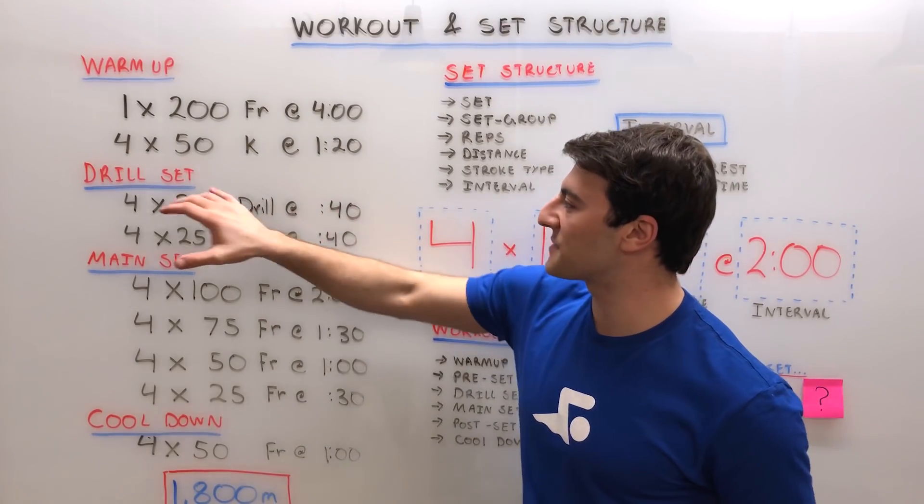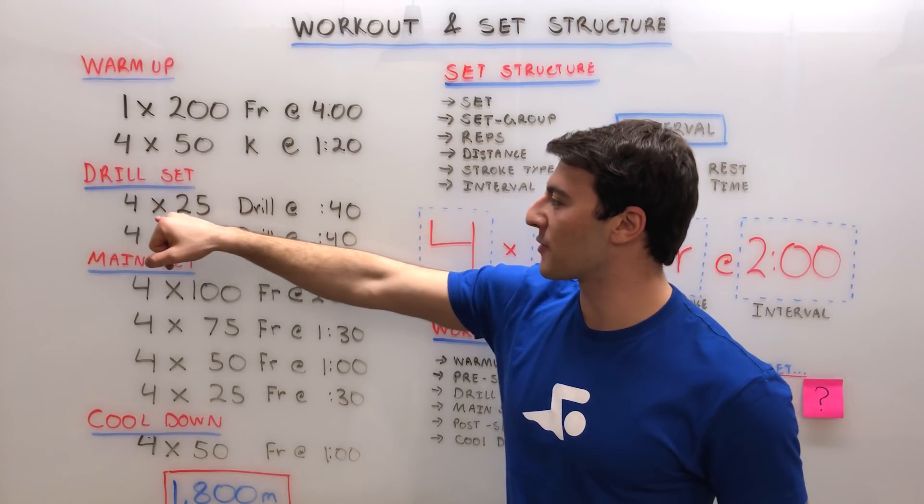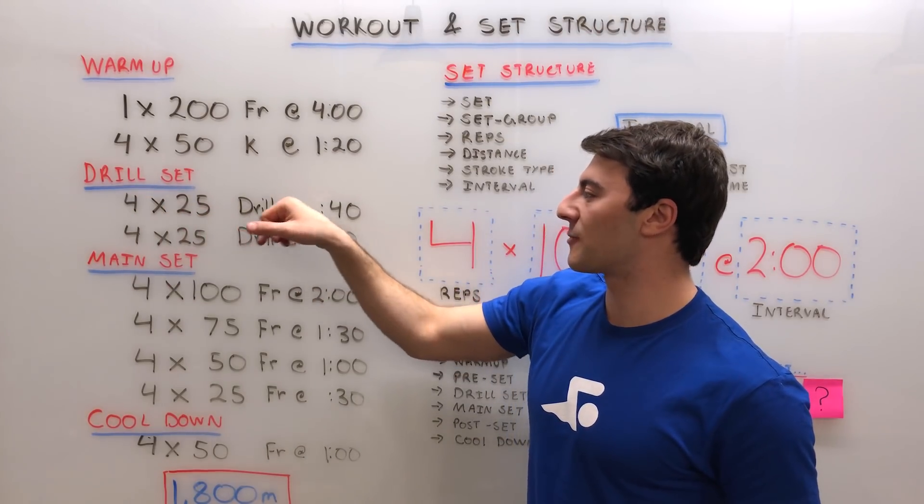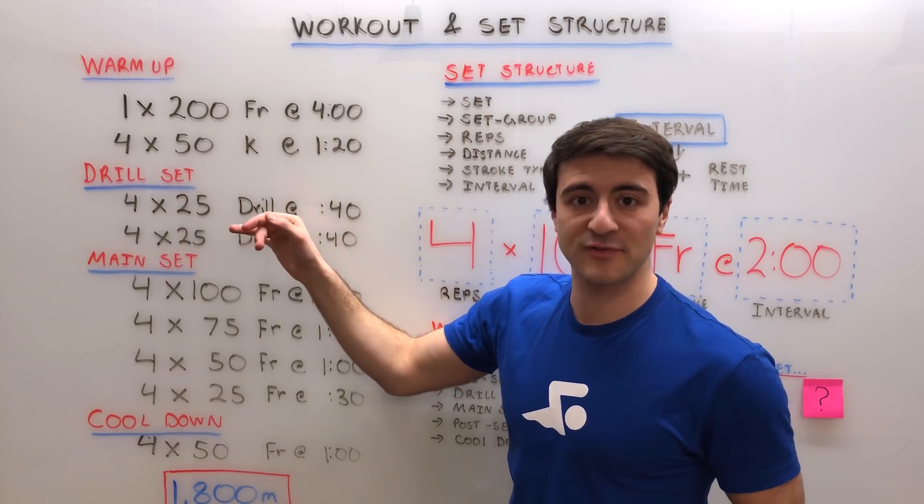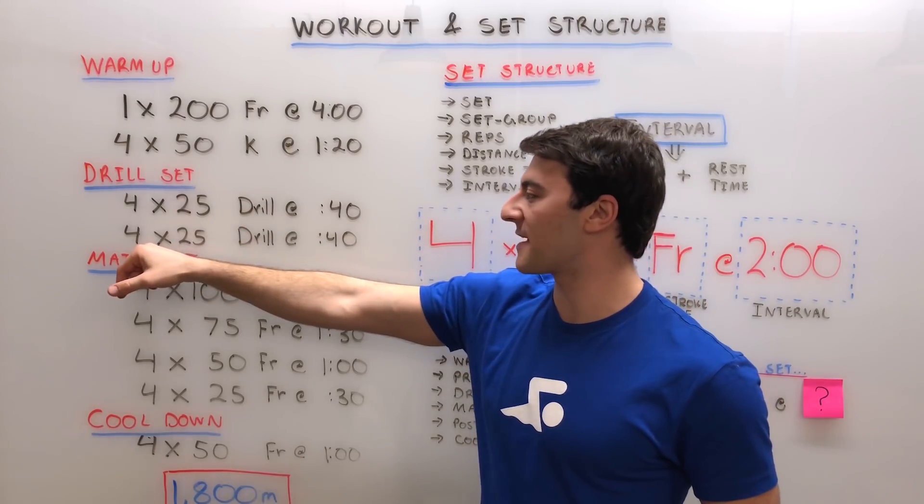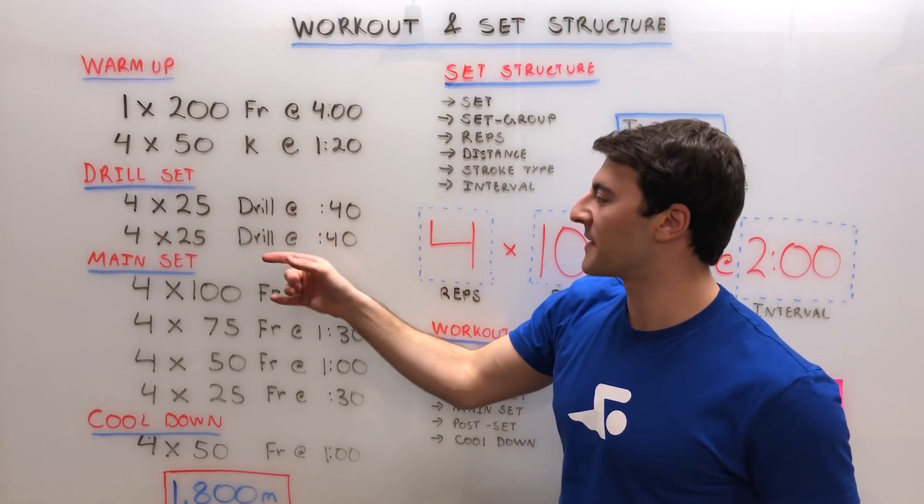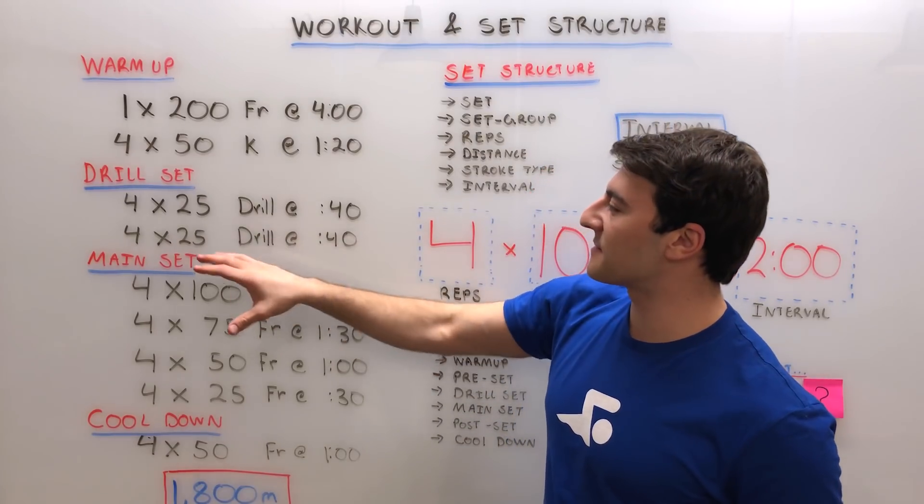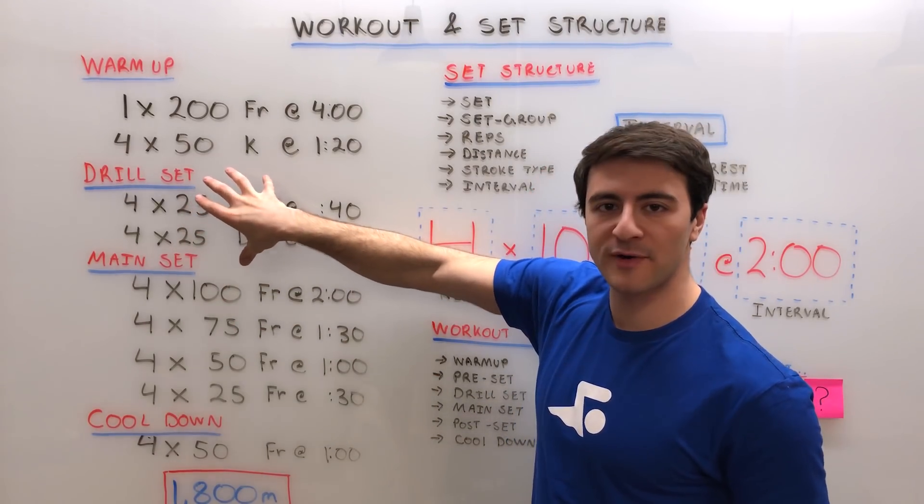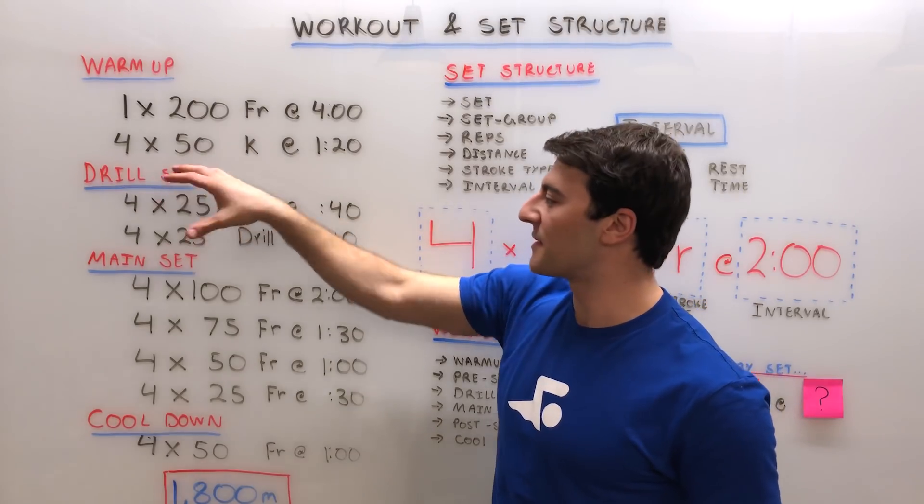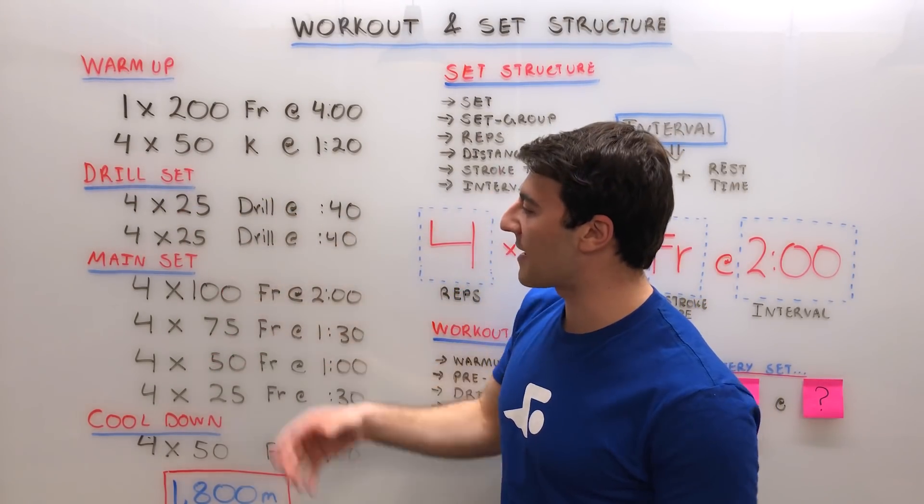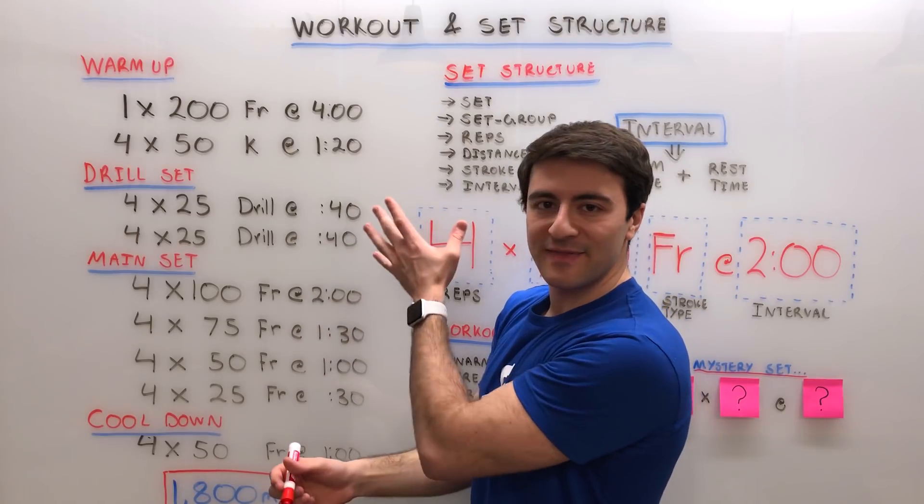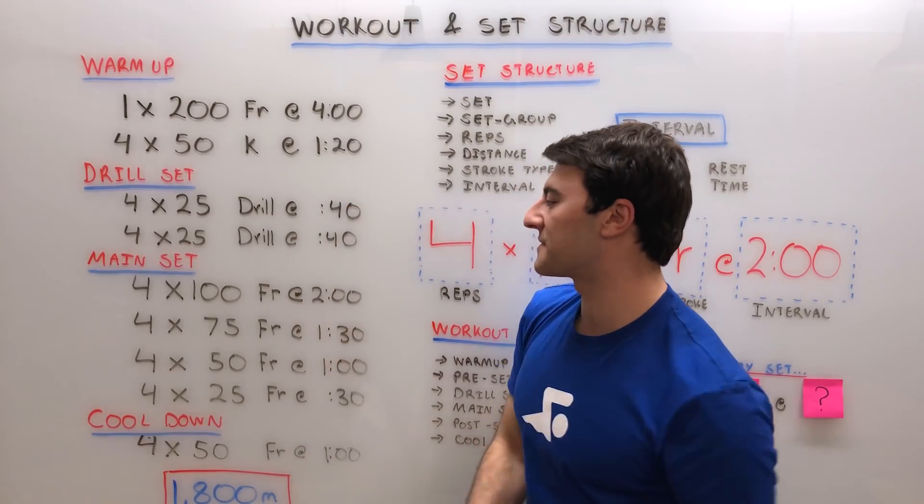In this case we have a dedicated drill set where it looks like we're doing 4x25s of a particular drill, maybe it's the fist drill, followed by another set of 4x25s drill, let's call it three strokes plus 12 kicks. The idea is to focus on a specific component of the stroke on the drill set, so that way when you get into the main set, you can apply whatever you were working on in the drill set onto the main set.